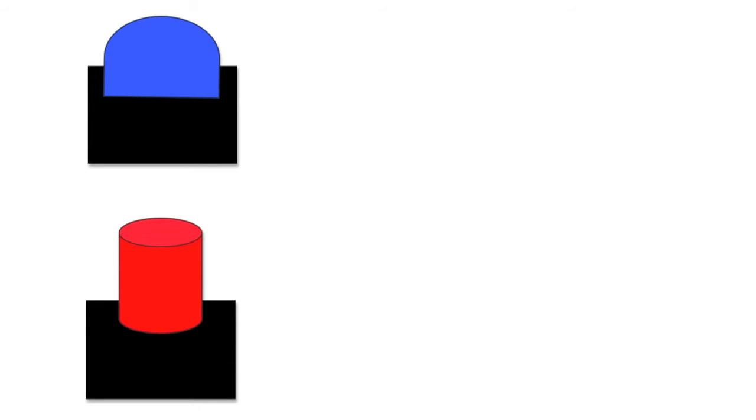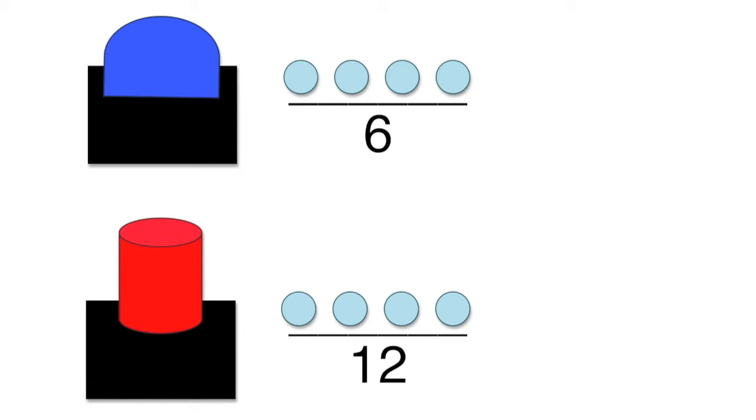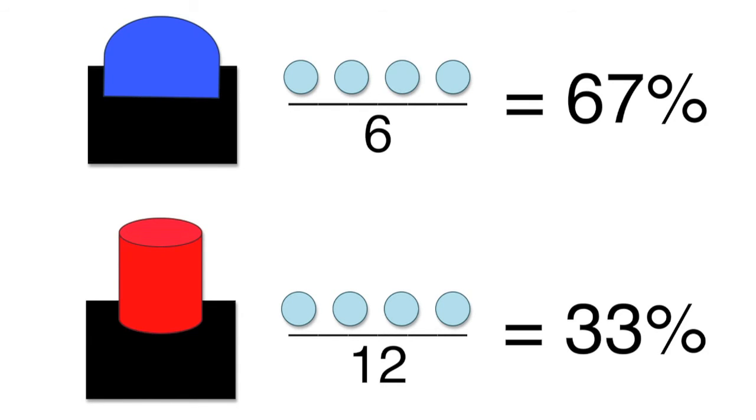So we ran the experiment again with a new group of children. This time we kept the frequency the same for both blocks. Each block caused the marble to dispense four times, while making sure that the probabilities were still different. One block worked 67% of the time, and the other worked 33% of the time.